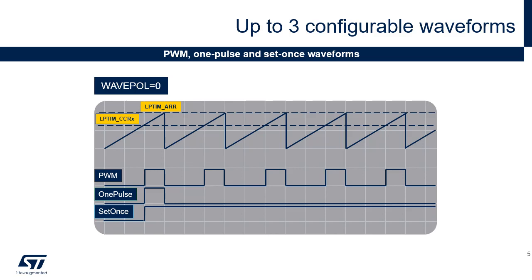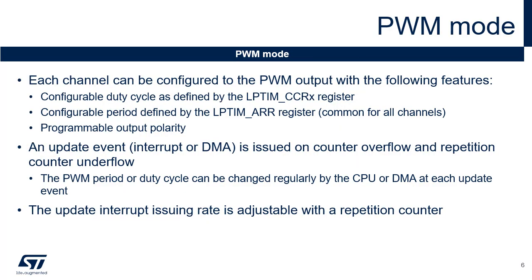The low-power timer's output polarity is controlled through the WAVEPOL bit field in the LPTIM_CFGR register. By setting the polarity bit, the default state of the output is high level and the waveforms are ones-complemented with respect to those represented in the figure. The PWM mode generates a signal with a frequency determined by the value of the LPTIM_ARR register and a duty cycle determined by the value of the LPTIM_CCRX register.